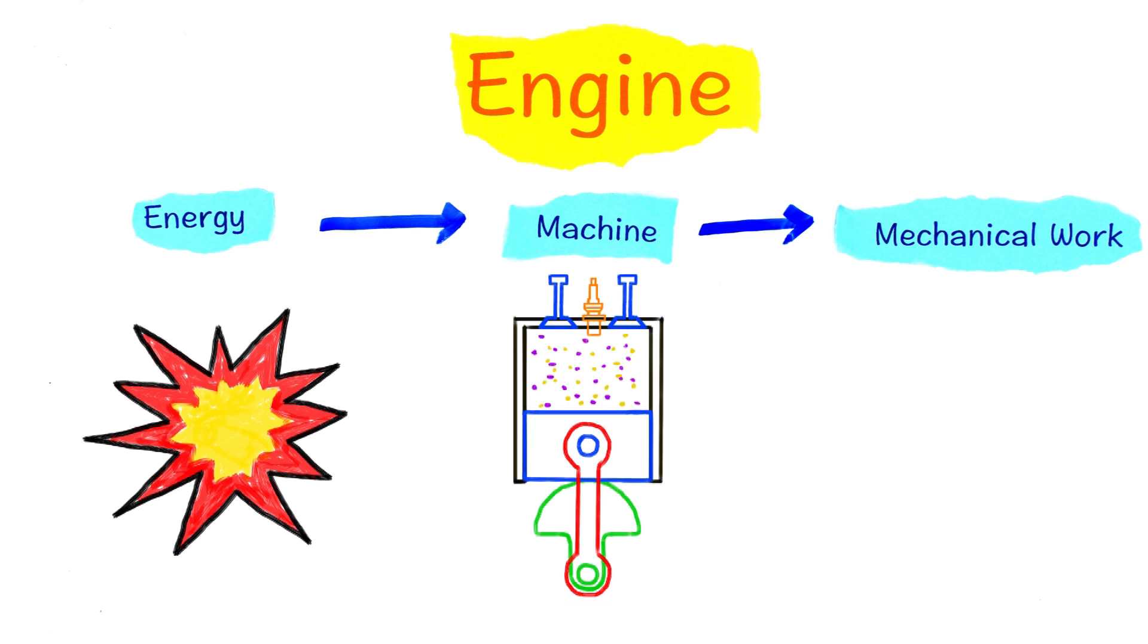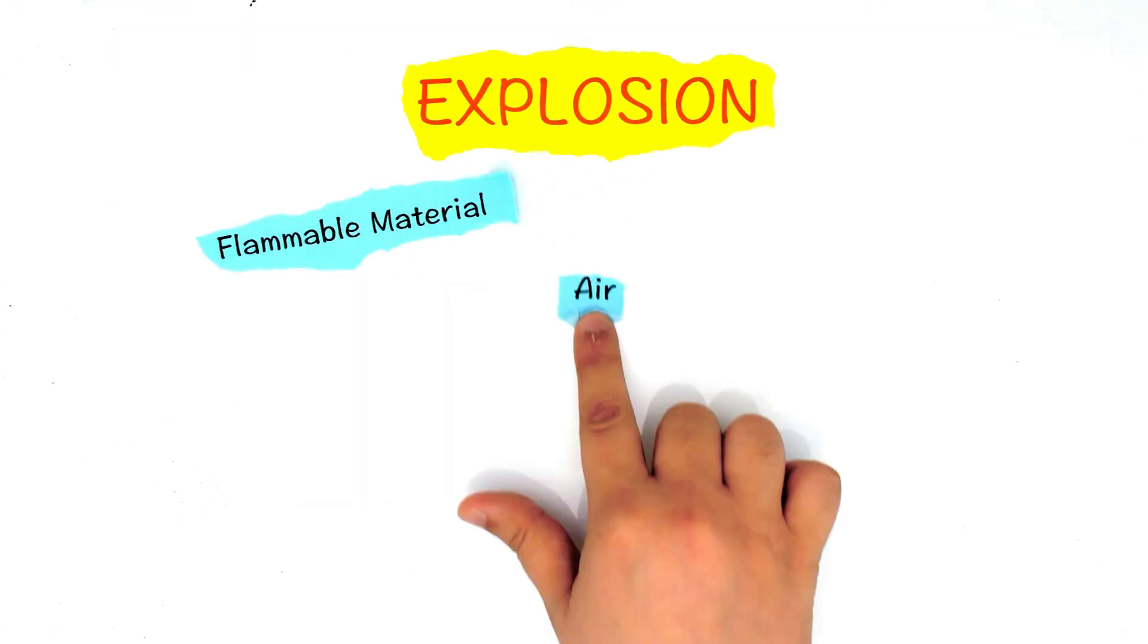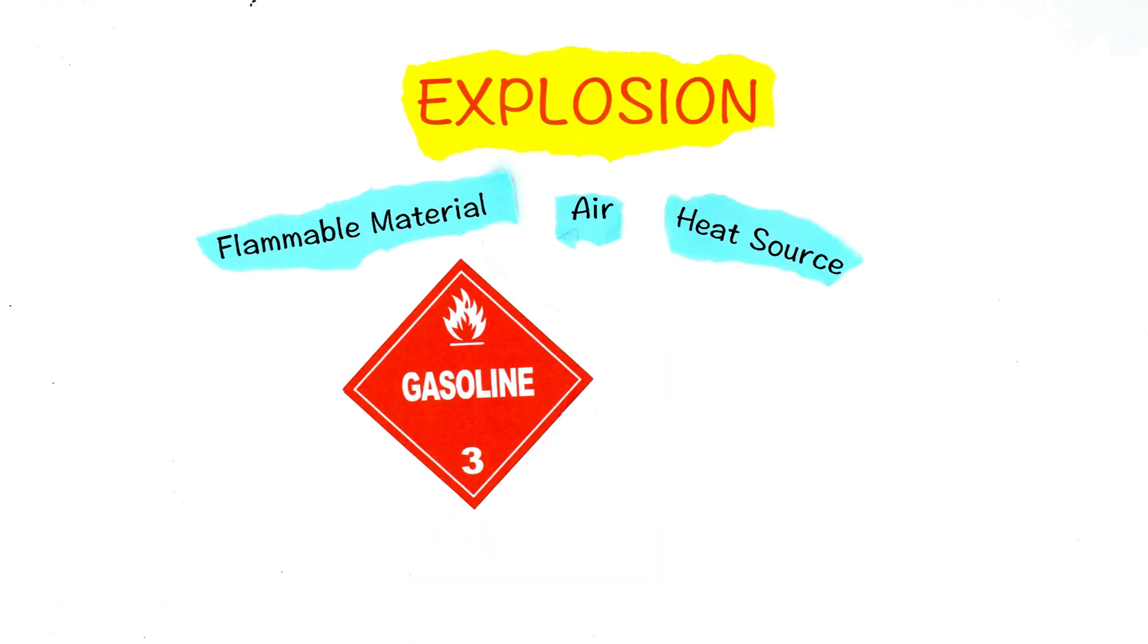I think the best way to really grasp the inner workings of the internal combustion engine is to try to build one from scratch. Shall we start? Let's start from the beginning. So how can we make an explosion? To create an explosion we need a flammable material, air, and a heat source.